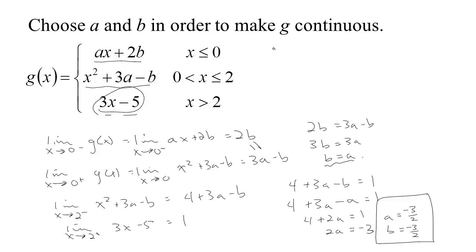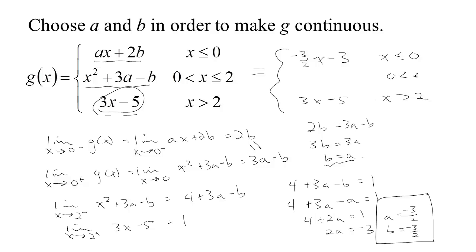Just to check: with a equals negative 3 halves and b equals negative 3 halves, we have negative 3 halves x plus 2 times negative 3 halves, which is minus 3 — for x less than or equal to 0. For x between 0 and 2 we use x squared plus 3a minus b: 3a is negative 9 halves, and minus b is plus 3 halves, giving negative 6 halves, which is negative 3. So the middle piece is x squared minus 3.